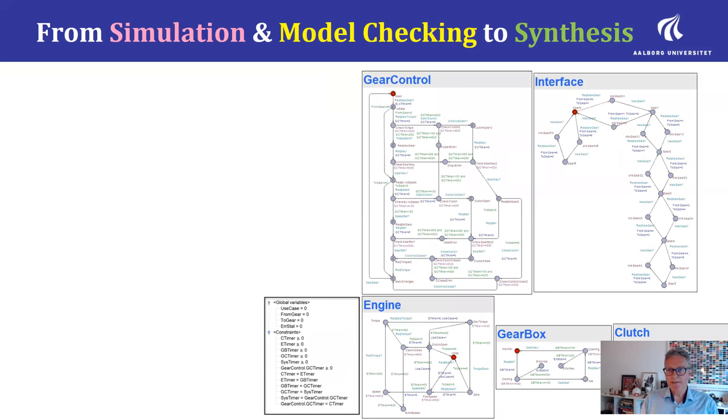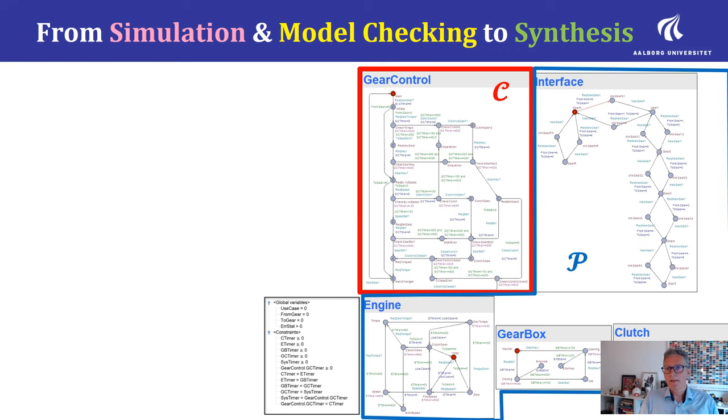As an example, look at this UPOL model here where you have a controller that needs to monitor and control a plant consisting of an interface, engine, gearbox and a clutch.